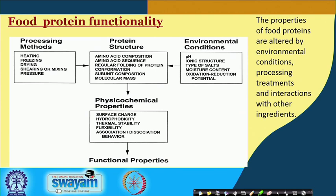The properties of food proteins are altered by environmental conditions, process treatments, and interactions with other ingredients. Processing methods generally include heating, freezing, drying, steaming or mixing under pressure. Environmental conditions such as pH, ionic structure, type of salts, moisture content, and oxidation-reduction potential all have important influences on protein structure.